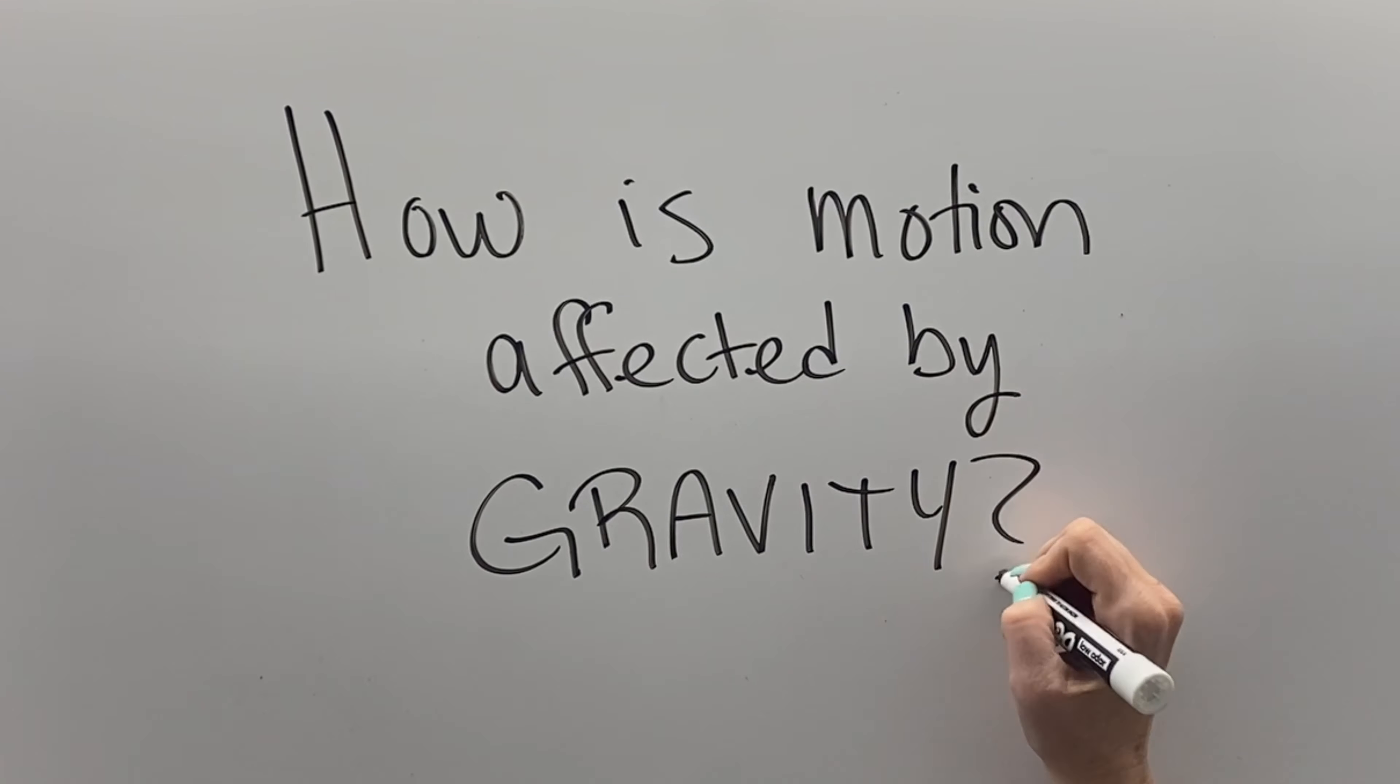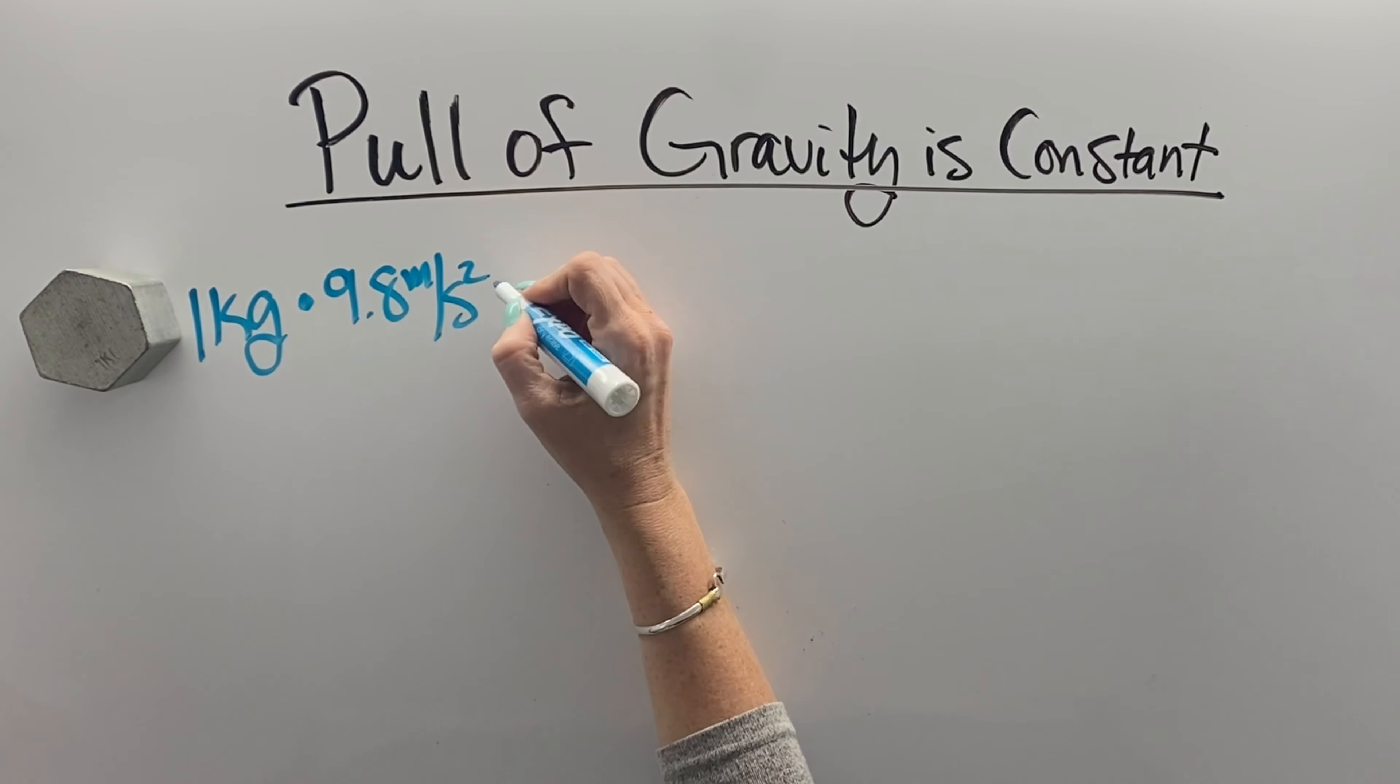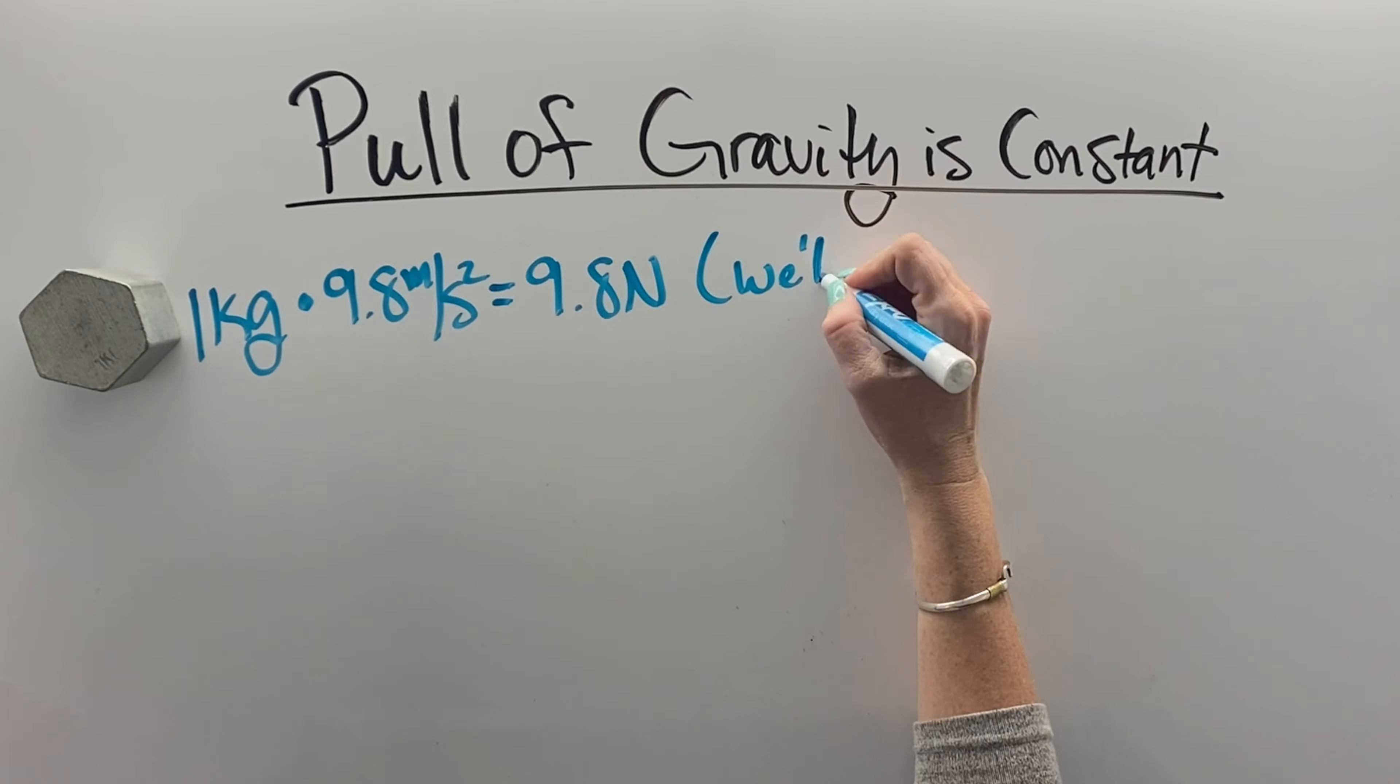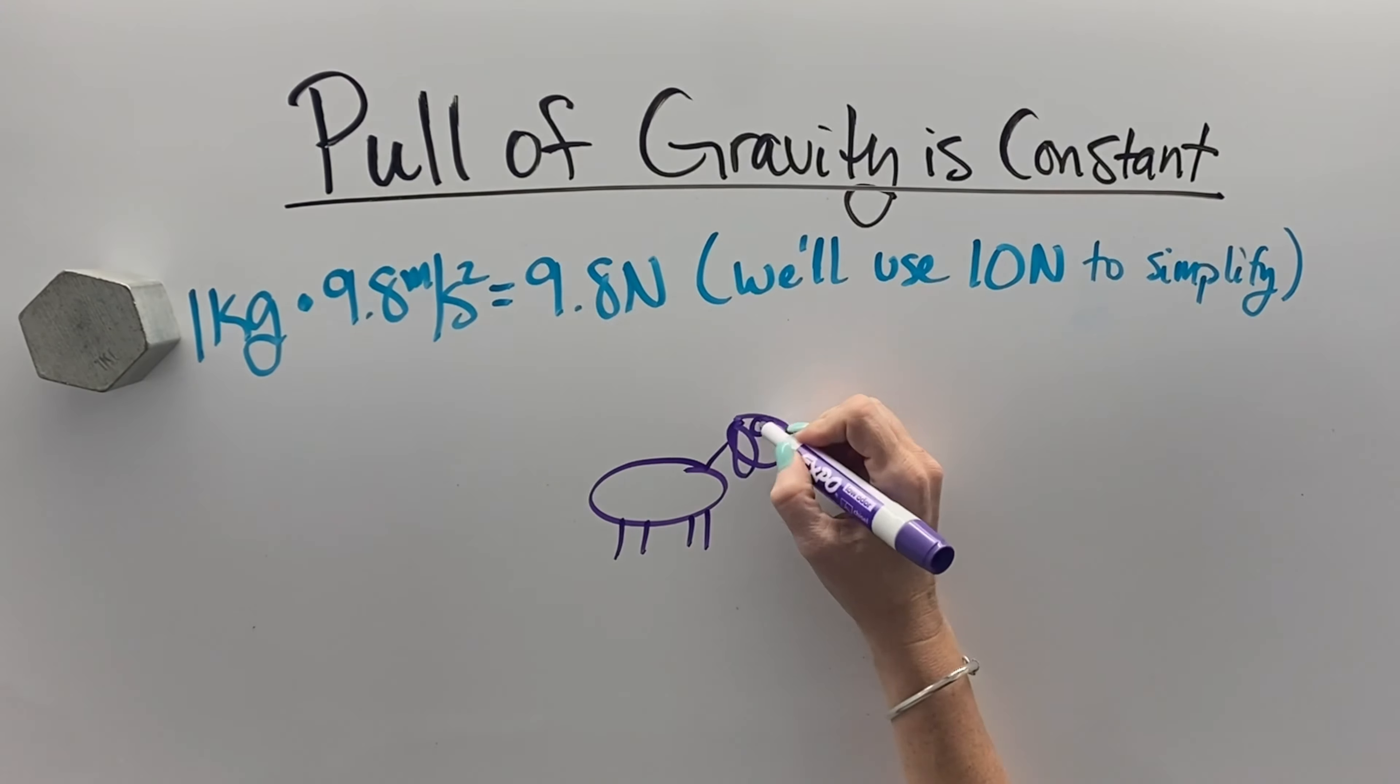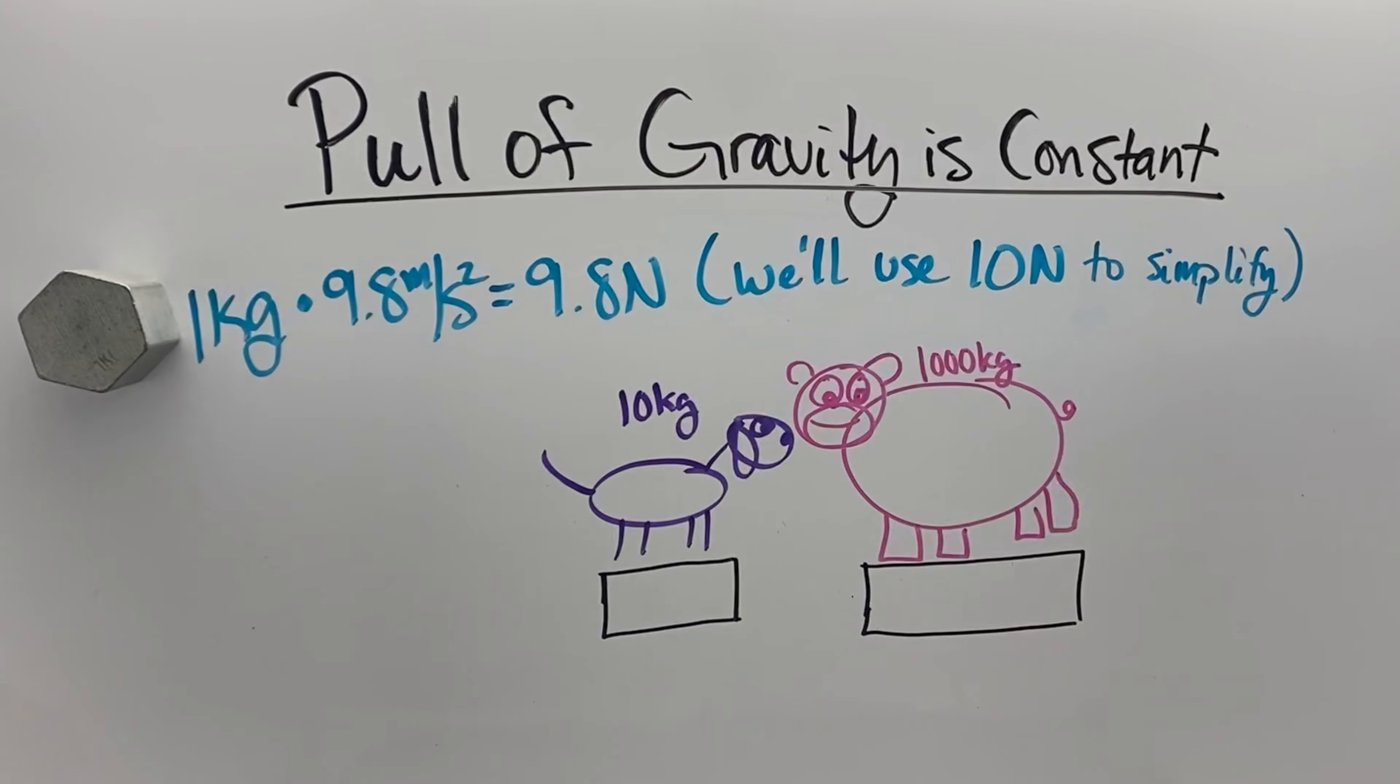Let's talk about gravity. If we look at a one kilogram mass, if we break all the mass in the planet into one kilogram segments, each would accelerate at 9.8 meters per second squared because the Earth pulls on everything with 9.8 newtons of force. We'll use 10 to simplify it.